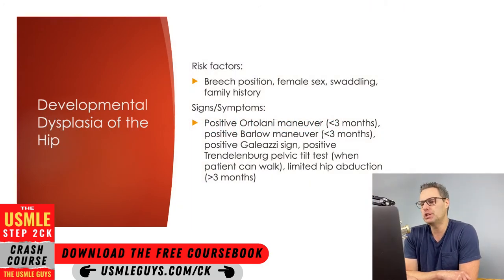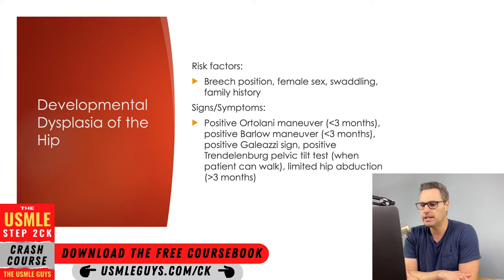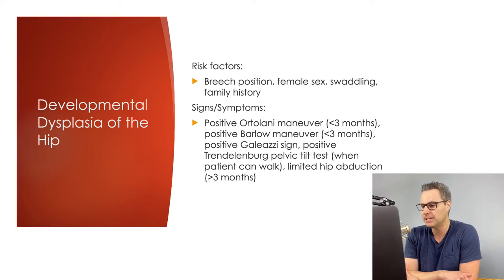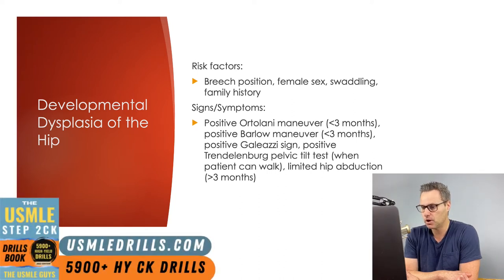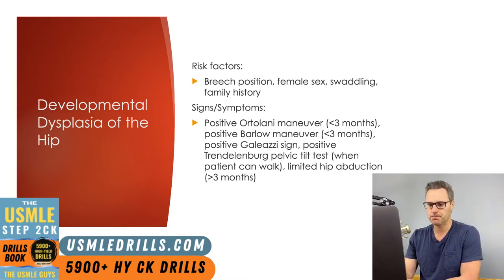With this condition, the pathology can be located in the acetabulum and/or the proximal femur, resulting in instability in the hip. Risk factors for developing this include breech presentation at 34 weeks or older, female gender, swaddling infants excessively, and having a family history of the condition.